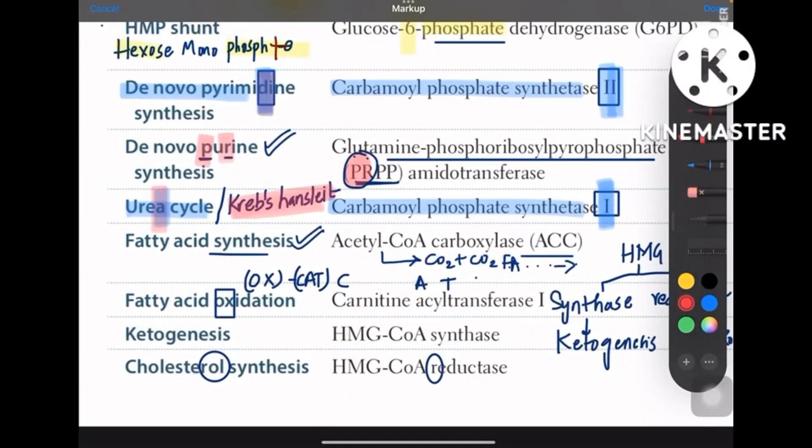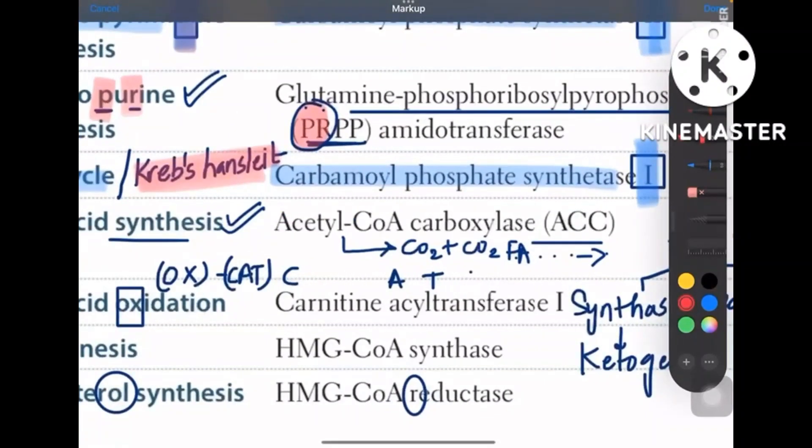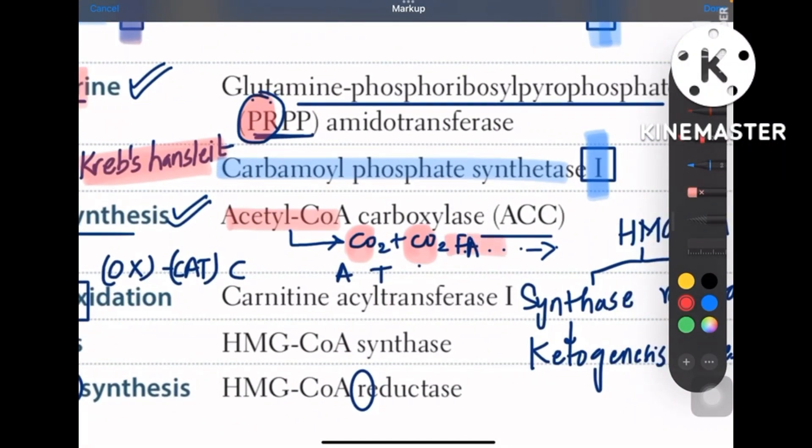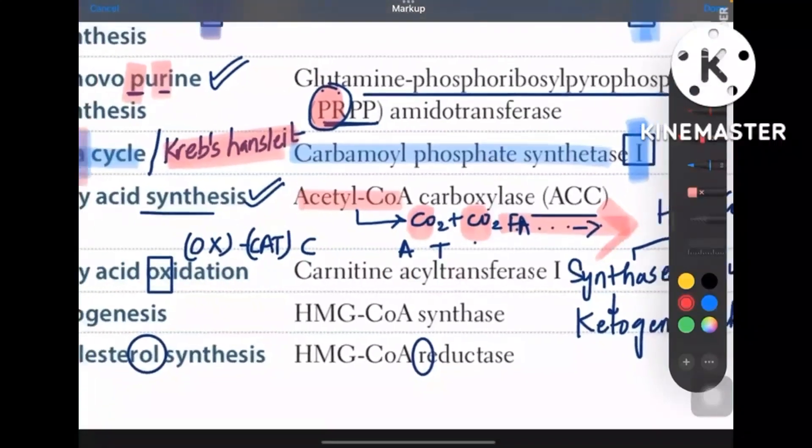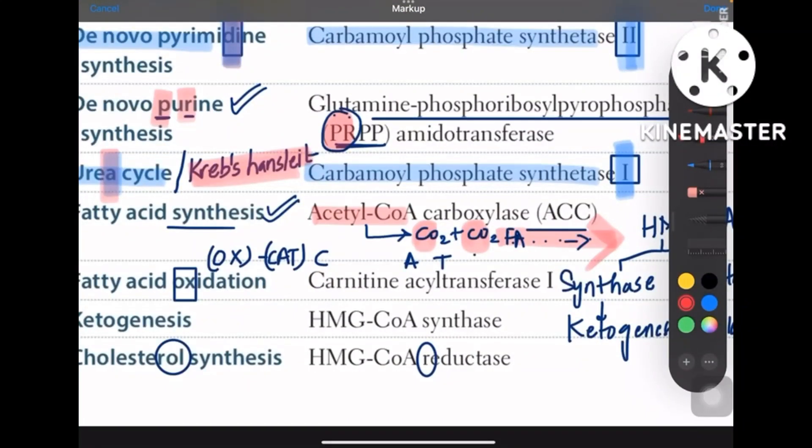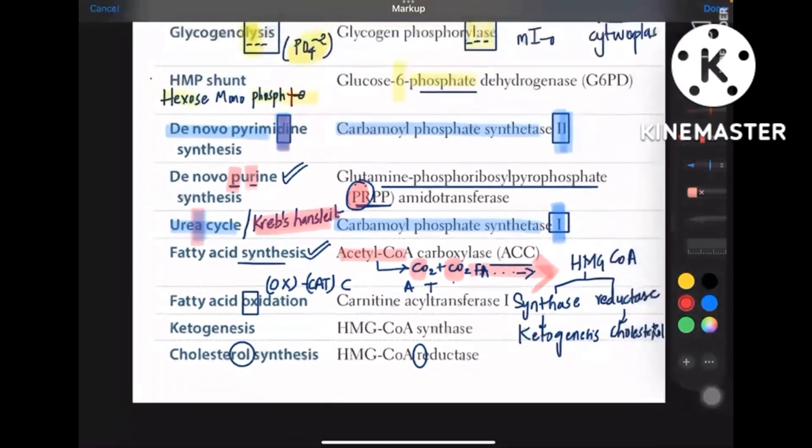Now coming to fatty acid synthesis and oxidation. So remember guys, fatty acid synthesis, to the acetyl-CoA, carbon dioxide molecules goes on adding so that the fatty acid chain length increases. So the name also acetyl-CoA carboxylase because carbon dioxide molecules go on adding to the acetyl-CoA compound. So that is the rate-limiting enzyme, acetyl-CoA carboxylase.